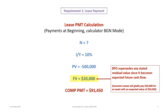The reason we use $20,000 as the FV, even though the data states an expected residual of $50,000, is that the $20,000 is the BPO — the bargain purchase option. The BPO supersedes any stated residual value because $20,000 becomes the expected cash flow. The lessee is assumed to happily pay $20,000 at the end of the lease for an asset with an expected value of $50,000. If there were no BPO, you would calculate the lease payment using the $50,000 residual.